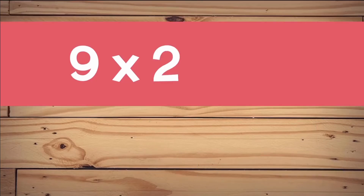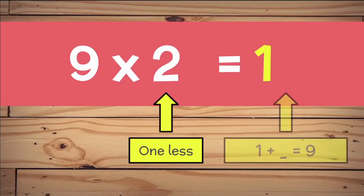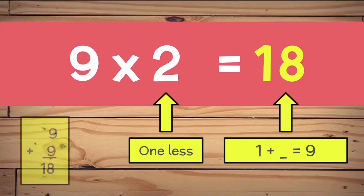9 times 2. We need to think: what's 1 less than 2? We know 1 is 1 less than 2, or 2 take away 1 equals 1. Now let's think: 1 plus what number equals 9? 1 plus 8 equals 9, so we know that 9 times 2 equals 18. That's the trick. Now let's check if it's true — 9 plus 9 does equal 18.